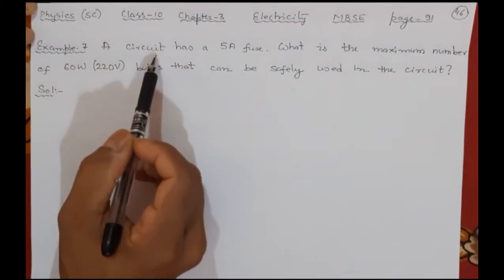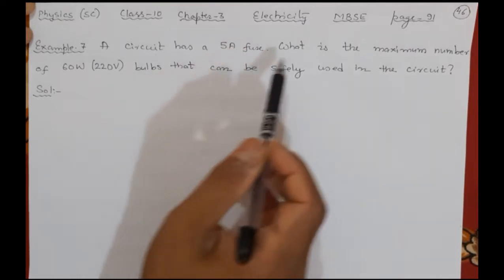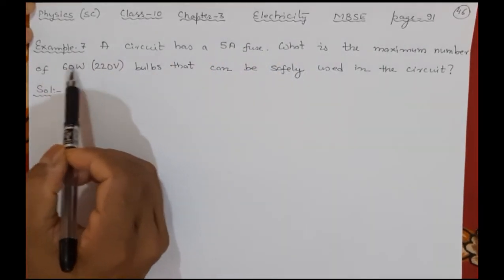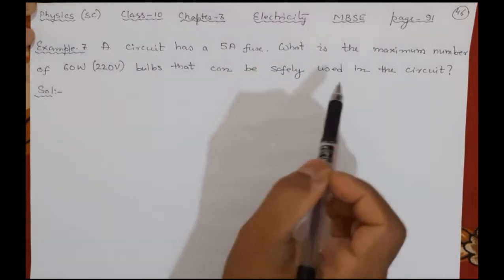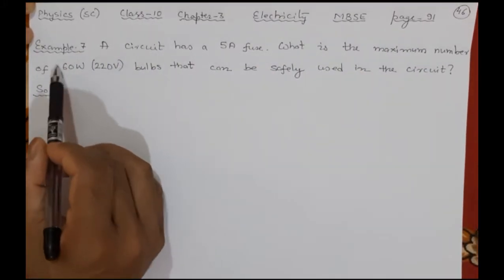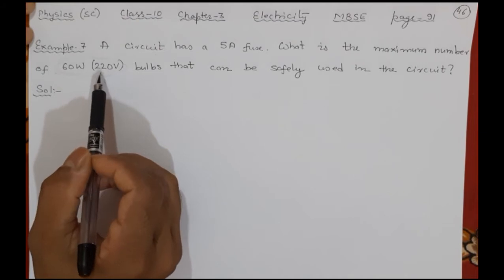A circuit has a 5 ampere fuse. What is the maximum number of 60 watt, 220 volt bulbs? This is the specification of the bulb that can be safely used in the circuit. This type of bulb I have to use and how many I can use?